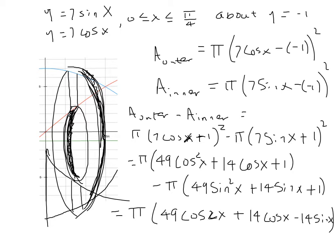We do the same for the inner area: that's the distance from y equals 7 sine x to the line y equals minus 1, so we compute 7 sine x minus negative 1, square that as the inner radius, multiply by pi, and get the area of the inner circle. Subtracting outer minus inner we have pi times (7 cosine x + 1)² minus pi times (7 sine x + 1)². Expanding, this gives pi times (49 cos²x + 14 cosine x + 1) minus pi times (49 sin²x + 14 sine x + 1).